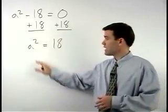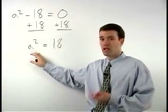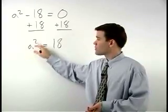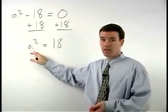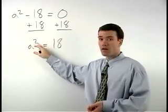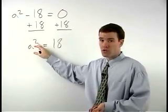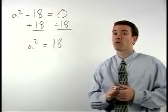Next, we must get the a by itself. And in order to do that, we do the opposite of what is happening to a. Since a is being squared, the opposite of squaring is square rooting.